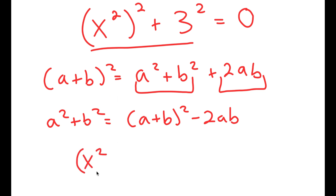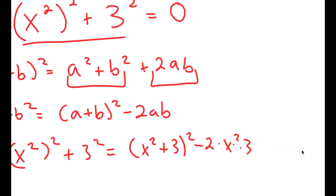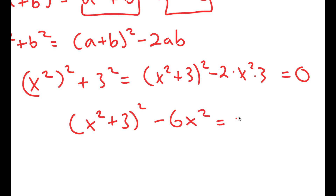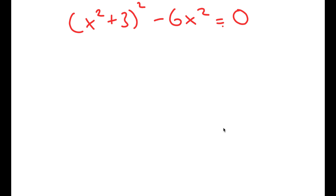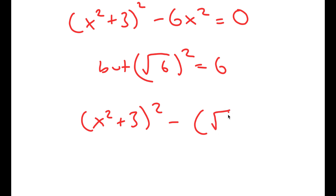So in this case, x squared squared plus 3 squared is equal to x squared plus 3 squared minus 2 times x squared times 3. And remember, this is all still equal to 0. So now I get x squared plus 3 squared minus 6x squared is equal to 0. And the square root of 6 squared is equal to 6, so I can rewrite this as x squared plus 3 squared minus the square root of 6x, all squared.